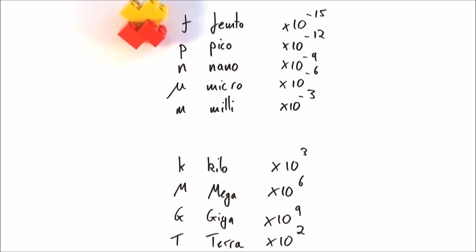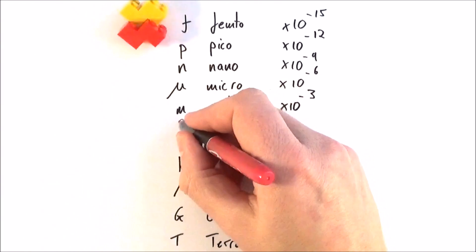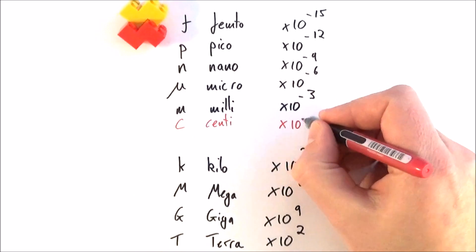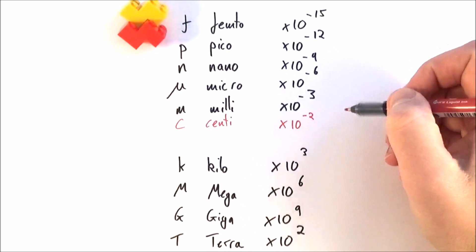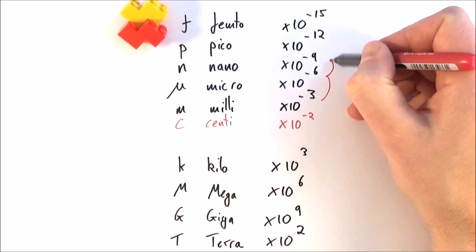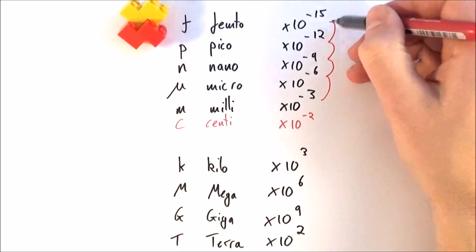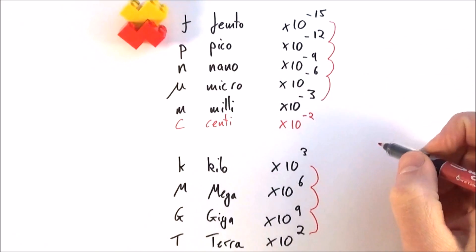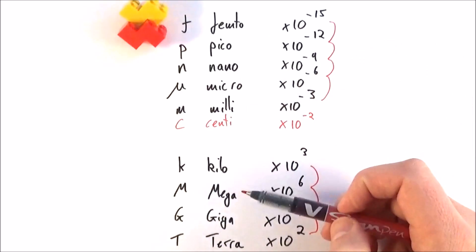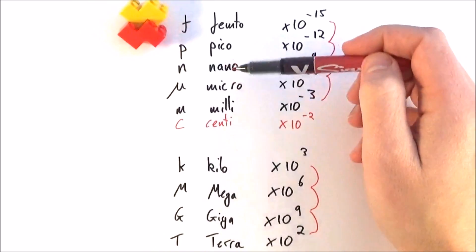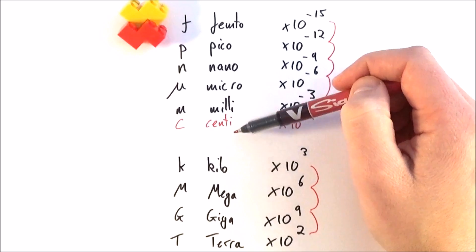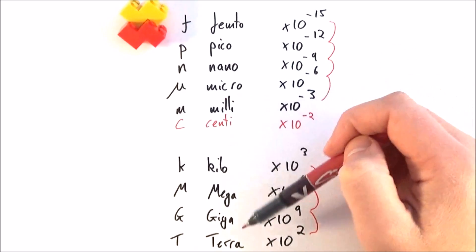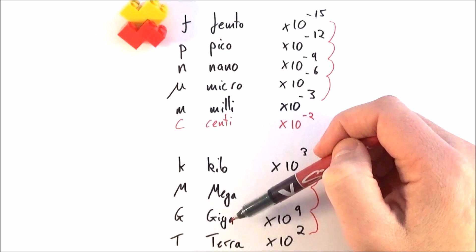I've left one out which you're probably most familiar with, which is centi — as in a centimetre — and that's ten to the minus two. I left it out initially because all of these go up or down by a factor of a thousand each time, so a thousand times smaller or a thousand times bigger. These are the things you have to be familiar with and be able to convert — from nanometres to metres, or perhaps from gigawatts to watts.